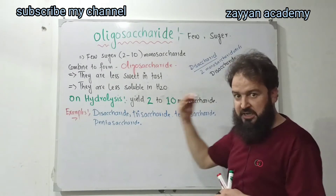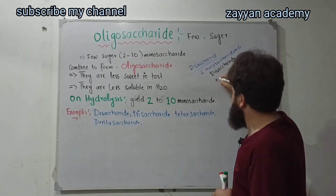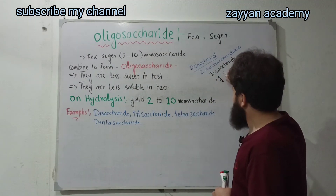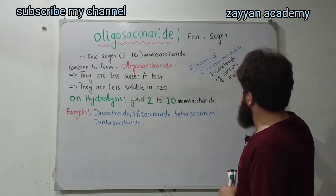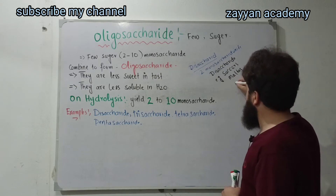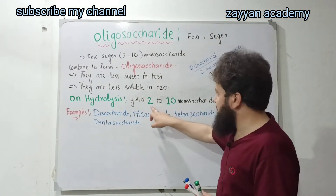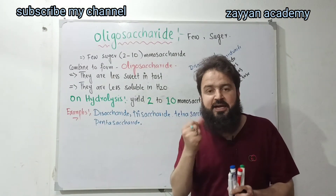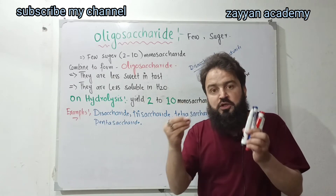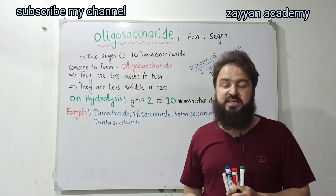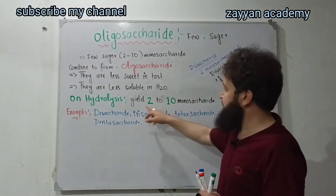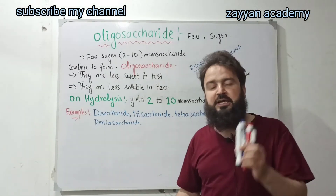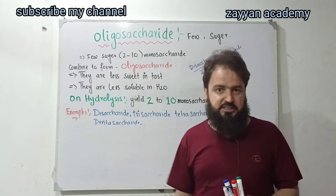The naming goes: if you have 2 to 10 units, we call them — tetra saccharide, penta saccharide, hexa saccharide, hepta saccharide — based on how many monosaccharide units are combined.